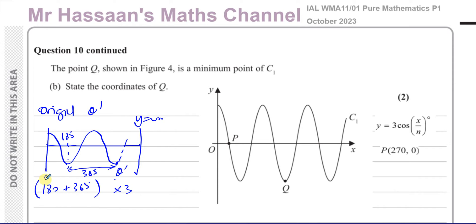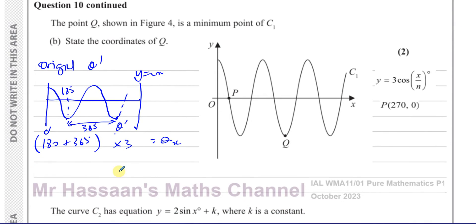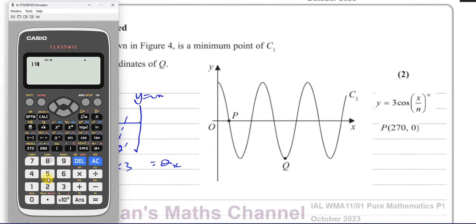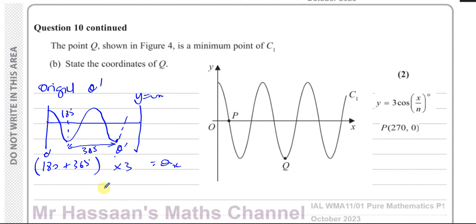Because we multiply the x-coordinate by 3 for this transformed function, the x-coordinate of Q is (180 plus 360) multiplied by 3, which gives 1620. For the y-coordinate, since we have a vertical stretch of factor 3, the minimum value becomes negative 3. So the coordinates of Q are (1620, −3).